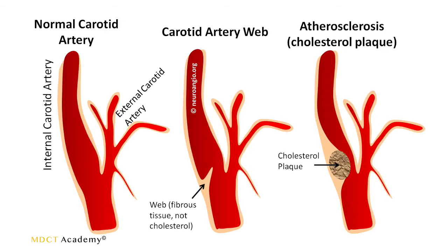Now let's talk about stroke — specifically the stenosis, plaques, and blood flow in the carotid and vertebral system and how they lead to thrombosis in the brain. In the normal carotid artery you have the internal and external carotid with multiple branches. A carotid artery web is fibrous tissue creating flow turbulence. A cholesterol plaque is due to atherosclerosis. Altered blood flow into the internal carotid artery causes reduced flow, which increases thrombin levels, leading to further blood clot formation that can travel up into the brain.